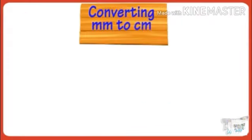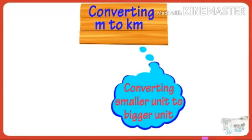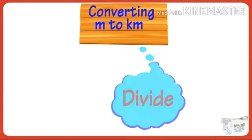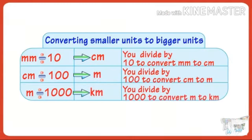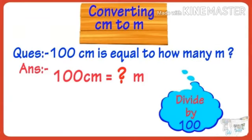Now we are going to convert smaller unit into higher unit. For smaller to bigger conversion, we cannot multiply — we want to divide. Looking at the table: millimeter to centimeter, divide by 10; centimeter to meter, divide by 100; meter to kilometer, divide by 1000.